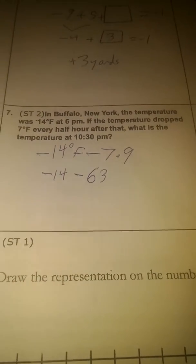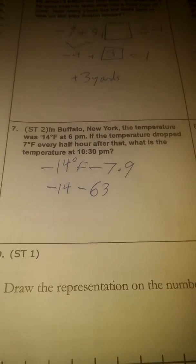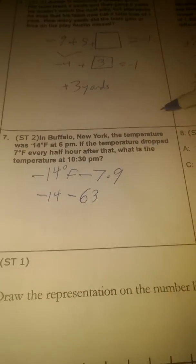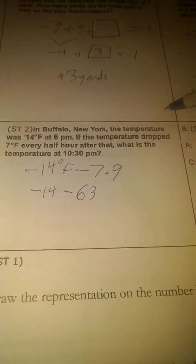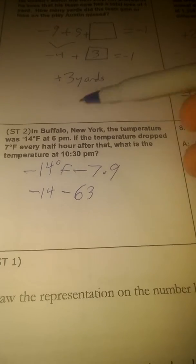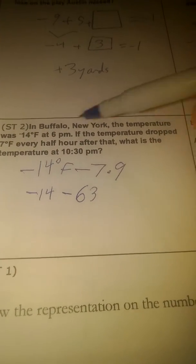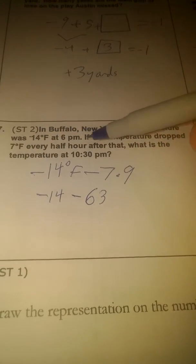Okay, we're on number seven from the integer assessment. We're told in Buffalo, New York, one day, the temperature was negative 14 degrees Fahrenheit at 6 p.m. The temperature drops 7 degrees Fahrenheit every half hour after that.